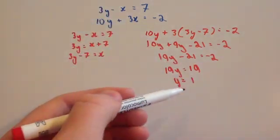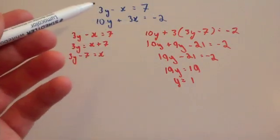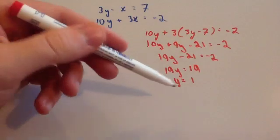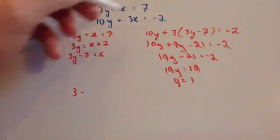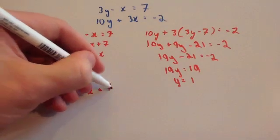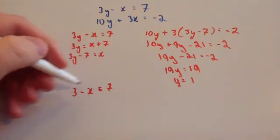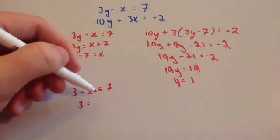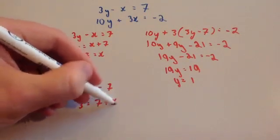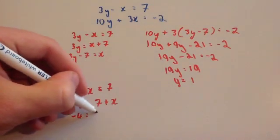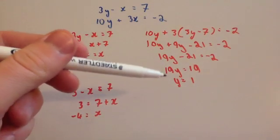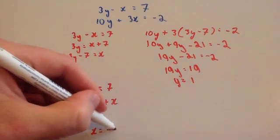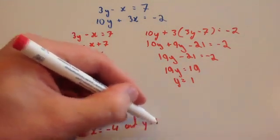Now substitute y equals 1 into the top equation. We have 3 times 1 minus x equals 7, so 3 minus x equals 7. Adding x to both sides gives 3 equals 7 plus x, and taking away 7 from both sides gives minus 4 equals x. So x equals minus 4 and y equals 1.